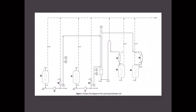Experiment 1 is about the extraction of acetone from water using toluene. In this experiment, there are two feeds and two outlet flows from the column. The feed flows are the solvent, which is toluene as the light phase, and the feed, which consists of an acetone-water mixture as the heavy phase. The outlets are the extract, which is the toluene-rich phase, and the raffinate, which is the water-rich phase.